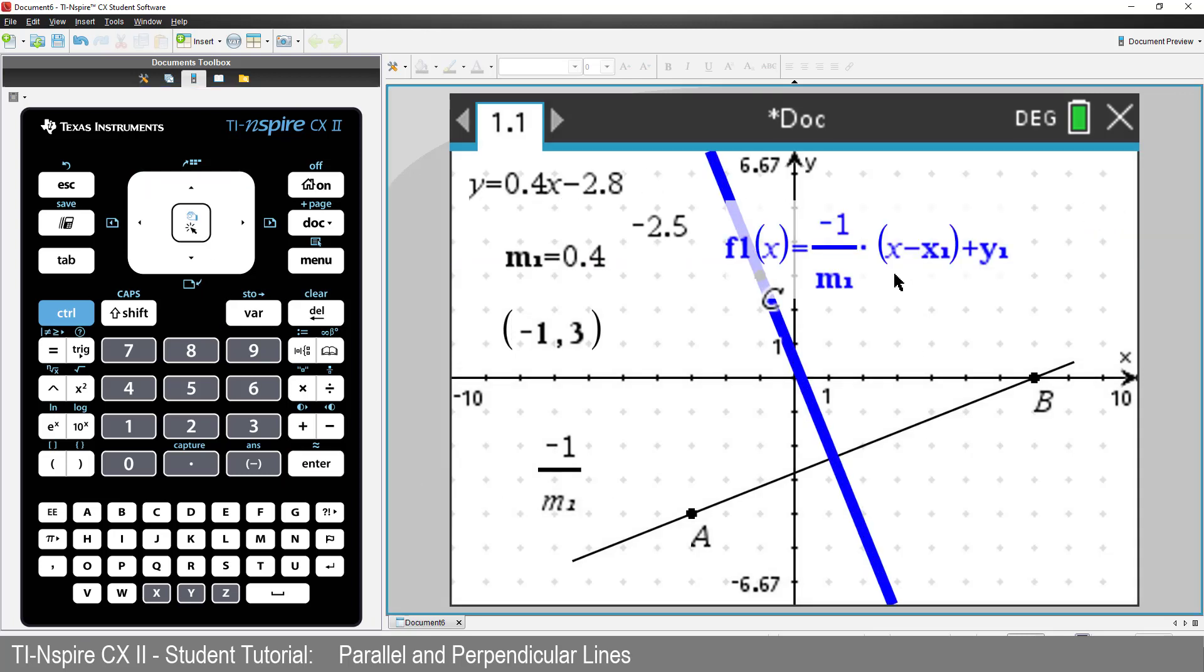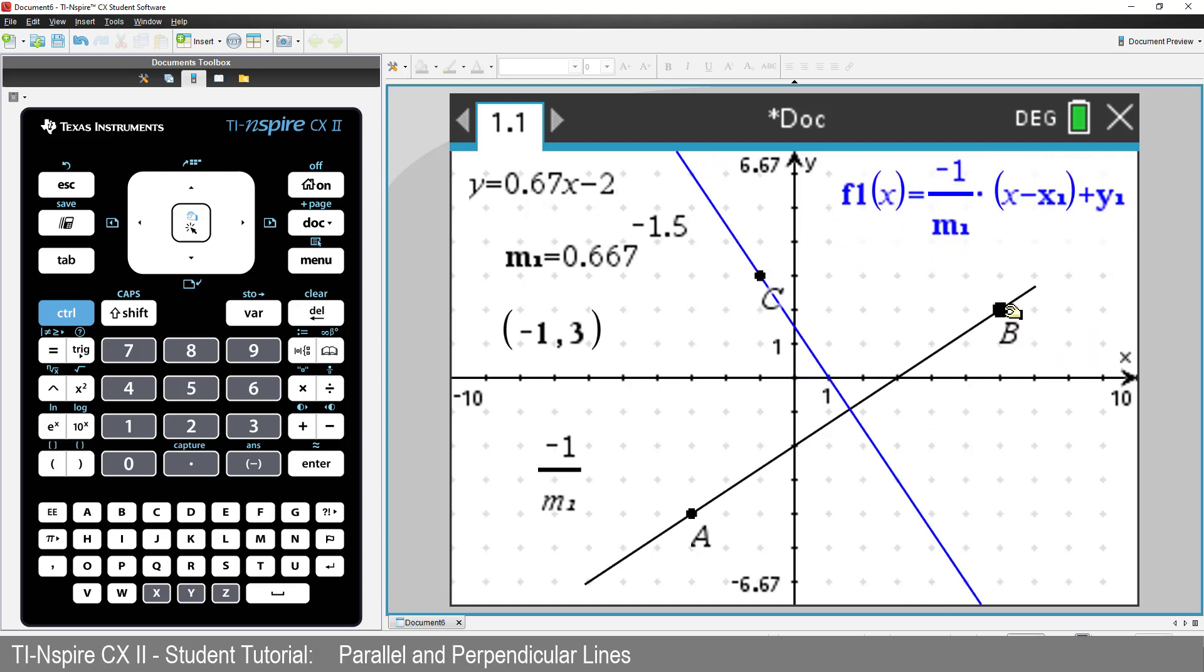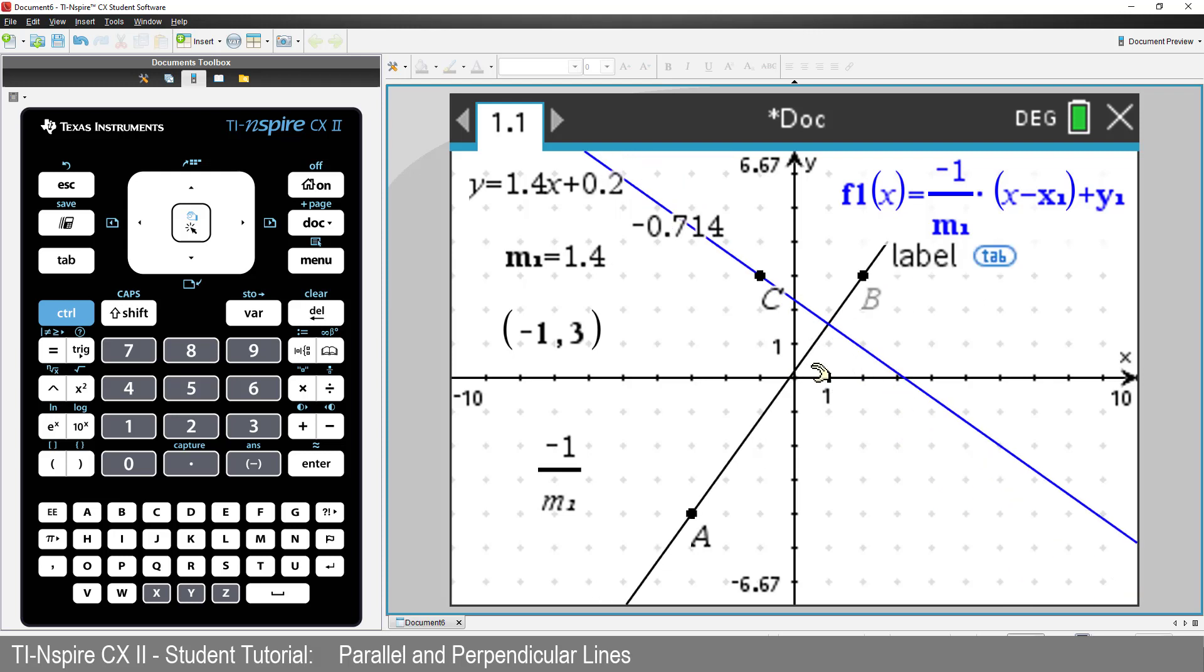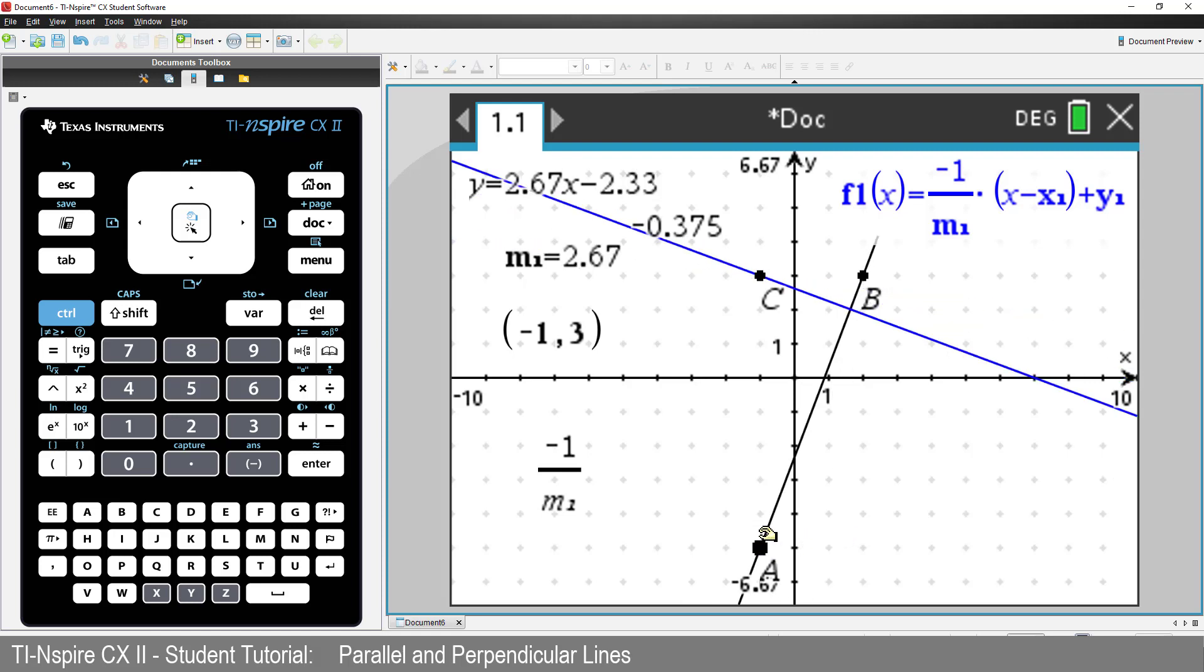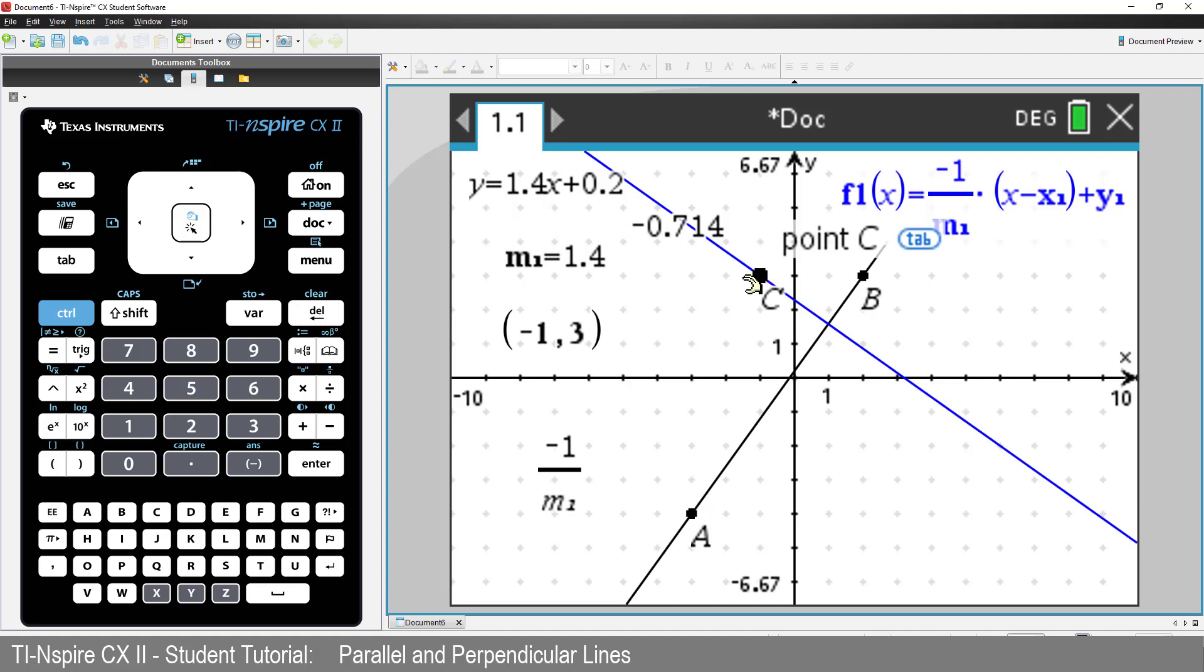Now we can move our original line or point C. And see that our defined equation is always perpendicular to our original line and passing through point C.